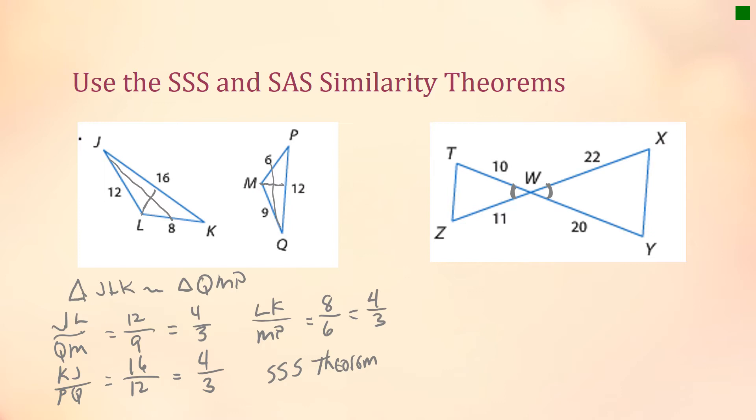Let's see how we want to set this up. Side T is opposite the largest and side Y here is opposite the largest. So let's then try to determine, is triangle TWZ similar to triangle YWX?